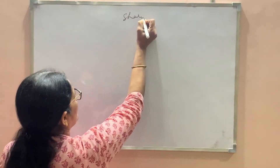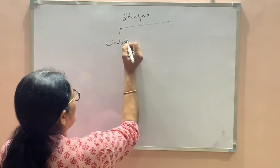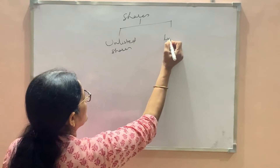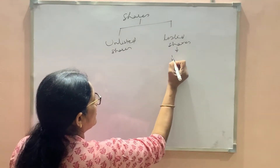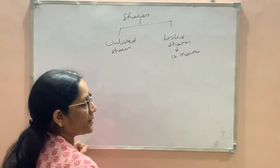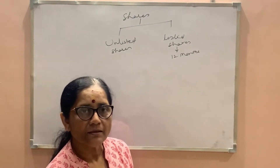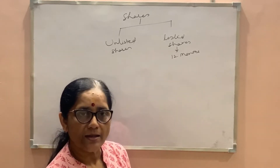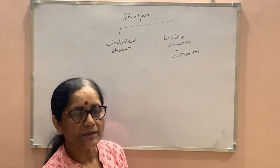We have two types of shares: unlisted shares and listed shares. For listed shares, we have a 12-month period — if the assessee keeps them for more than 12 months and sells, we have long-term gain or loss, and if the assessee keeps them for less than 12 months and sells, he has short-term capital gain or loss.